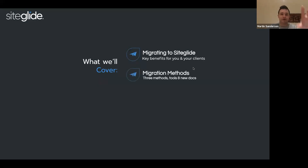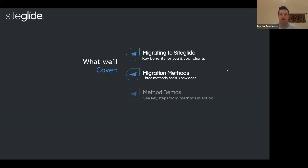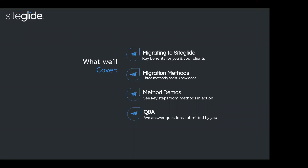Then we're going to take a look at the three migration methods. I've spoken about many of these methods and tools before, but we've fragmented them across four or five different webinars. We've now collated them all into one, and we've got a whole new bunch of documentation with hyperlinks to make life easier. Finally, we'll take a look at Q&A — some of you submitted questions — and we've also got a preview of some new plans and a partner deal.